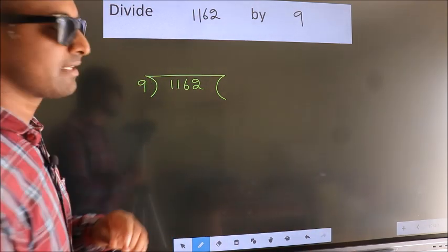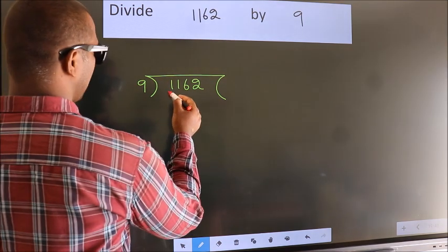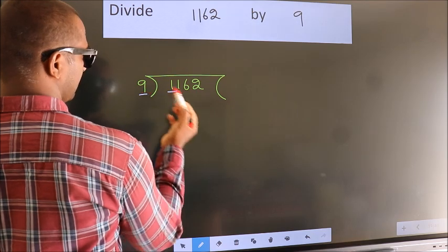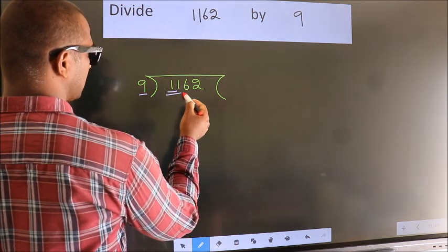Next. Here we have 1. Here 9. 1 is smaller than 9, so we should take two numbers: 11.